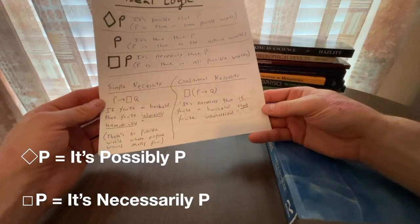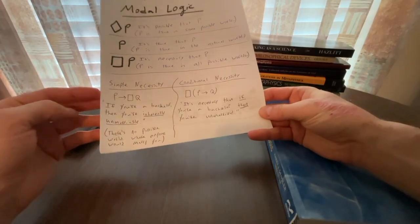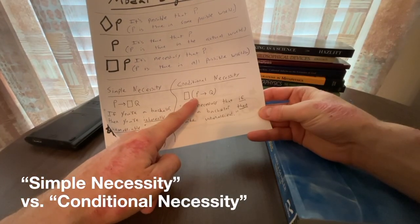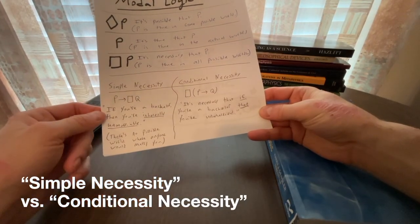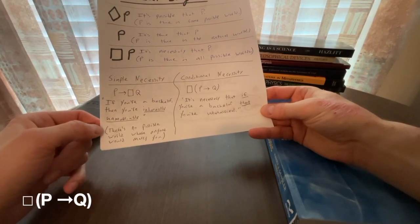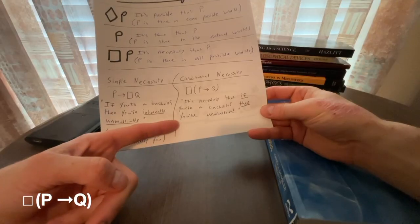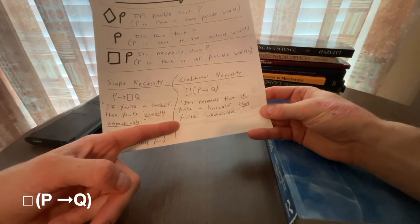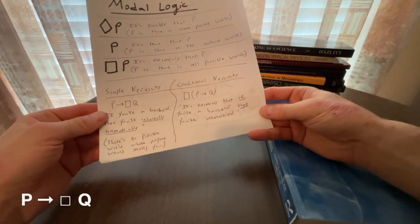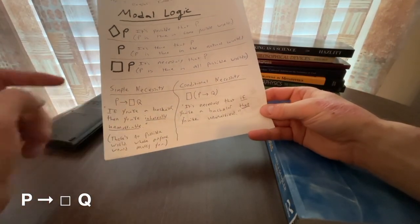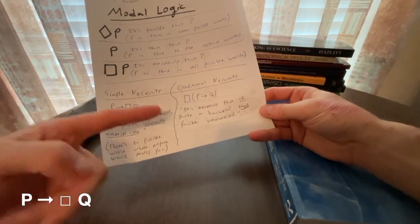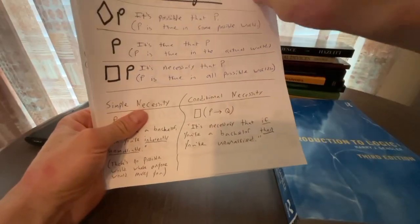In the book, Father Gensler talks about simple necessity versus conditional necessity. So note P arrow box Q versus box parentheses P arrow Q close parentheses. Consider if you are a bachelor, then you are unmarried. The second proposition is obviously true. It's necessary that if you are a bachelor, then you are unmarried. Well, clearly that's true. But the first proposition is not obviously true. In most cases, it's false. If you're a bachelor, then you are inherently unmarriable. In other words, there's no possible world where anyone would marry you. But that's not going to be true. So the placement of that box makes a difference.